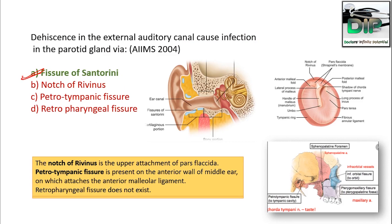This is the external auditory canal. The outer one-third part of the external auditory canal is cartilaginous, and in this portion there is a Fissure of Santorini. Through this fissure, any infection in the external auditory canal can dehisce into the parotid gland and cause infection there.